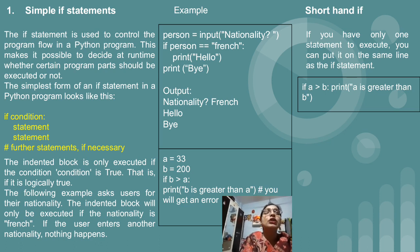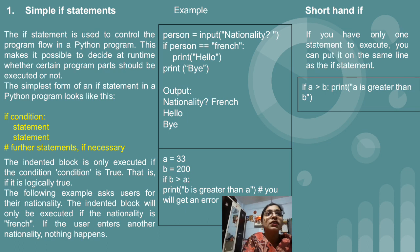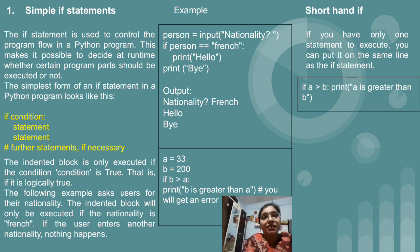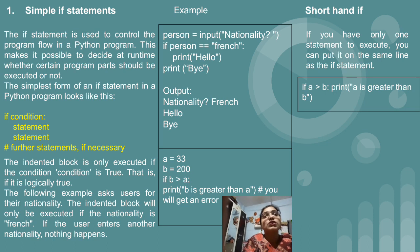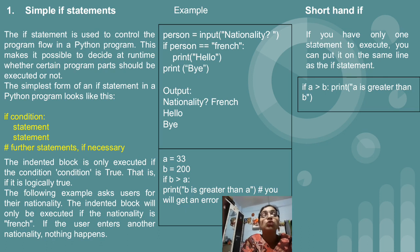After that, we have shorthand if. In a single line, we can write the if statement like this: if a greater than b, colon, print 'a is greater than b'. In the previous example, we wrote the statement on a new line after pressing Enter. But in shorthand if, you just write the statement on a single line only. That is called shorthand if — we can write if along with its statement on a single line. Use simple if whenever you have only a single condition to check and want to display something if that condition is true.